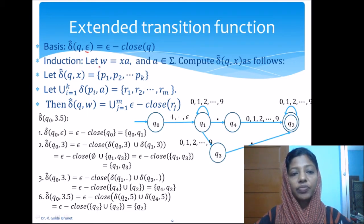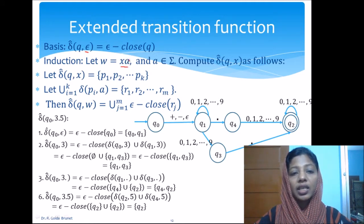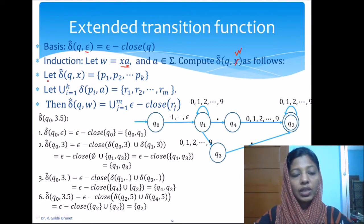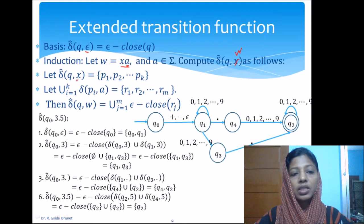The induction step: let w be a string which can be written as x·a, where x is a string and a is the last symbol of w, and a belongs to Sigma — meaning a is not a null string. Then we can compute the extended transition from state q upon w. We consider that the transition from q upon the string x gives some set of states p₁ to pk.